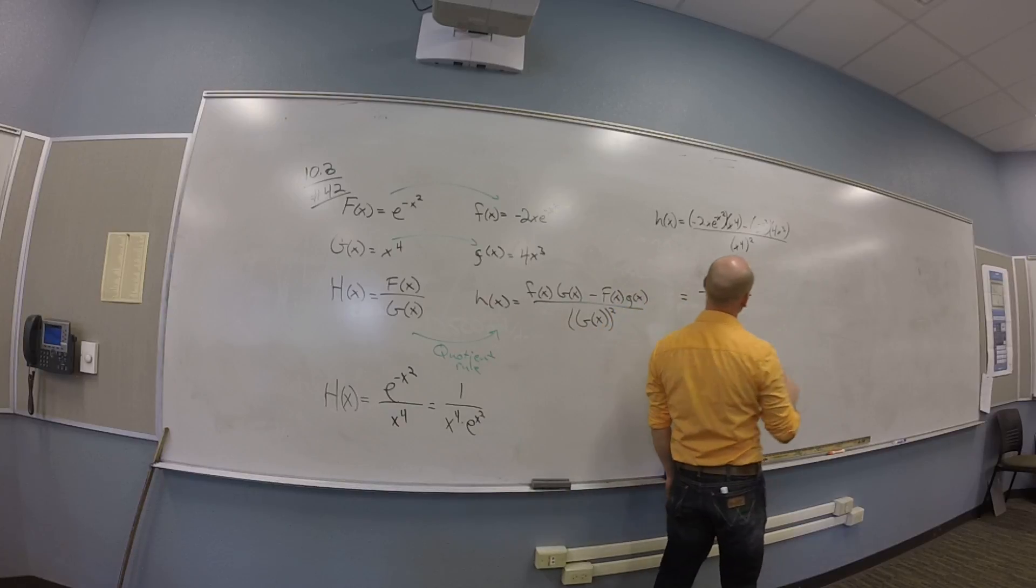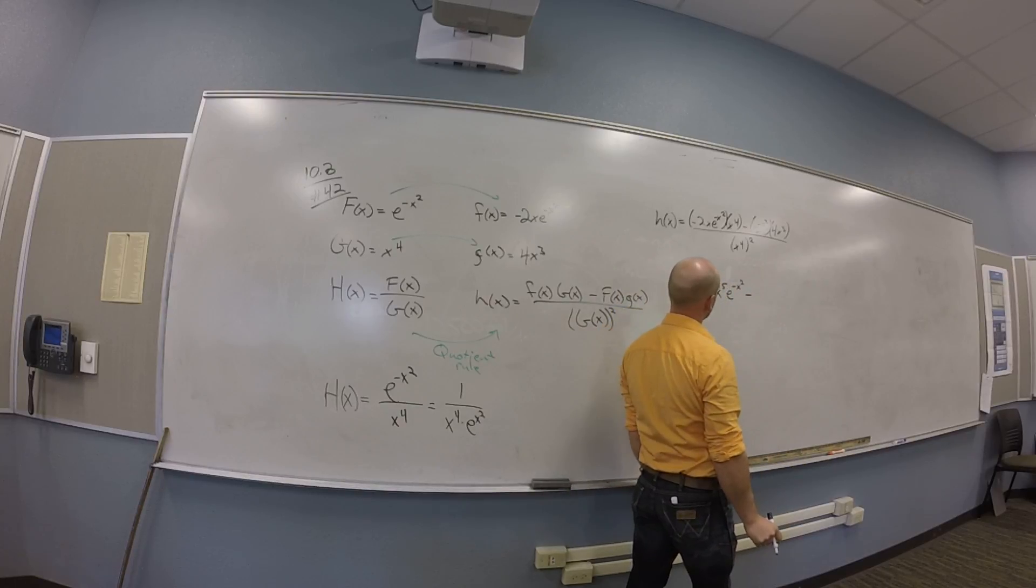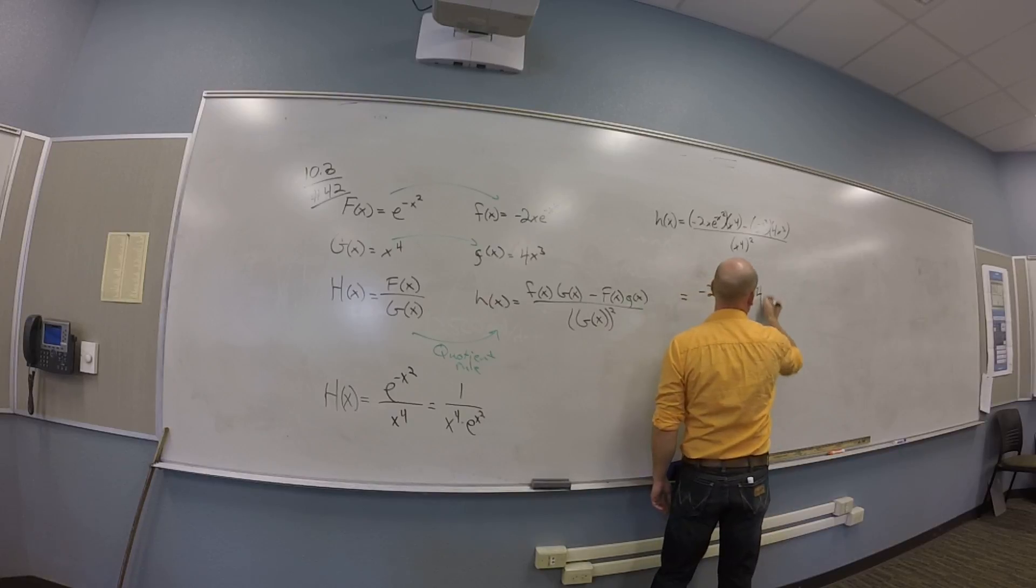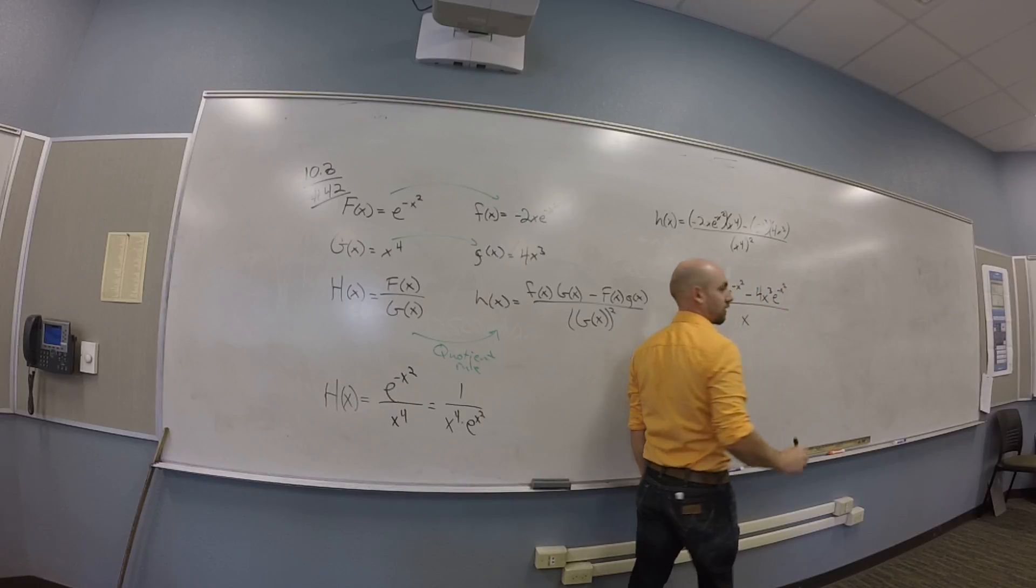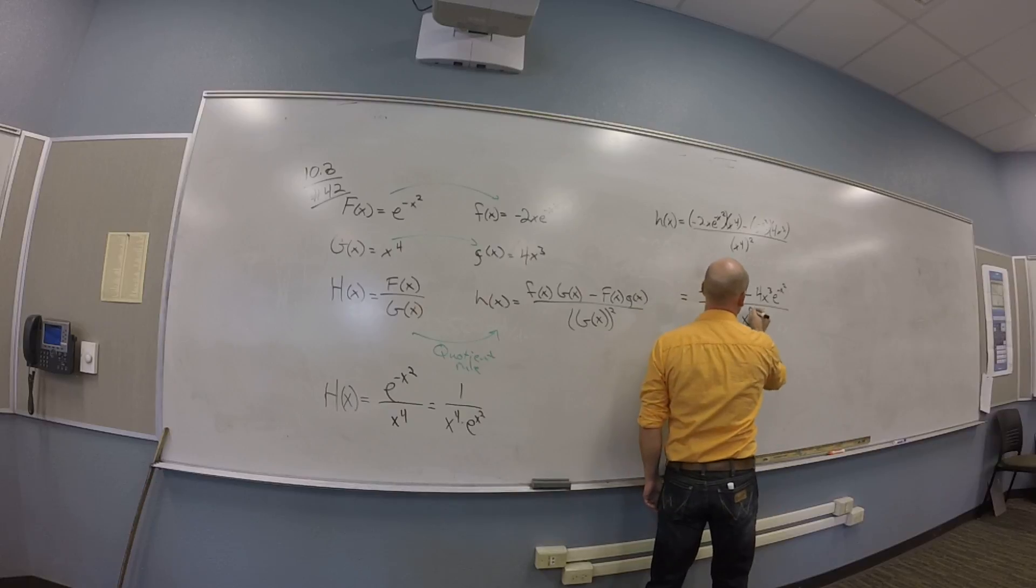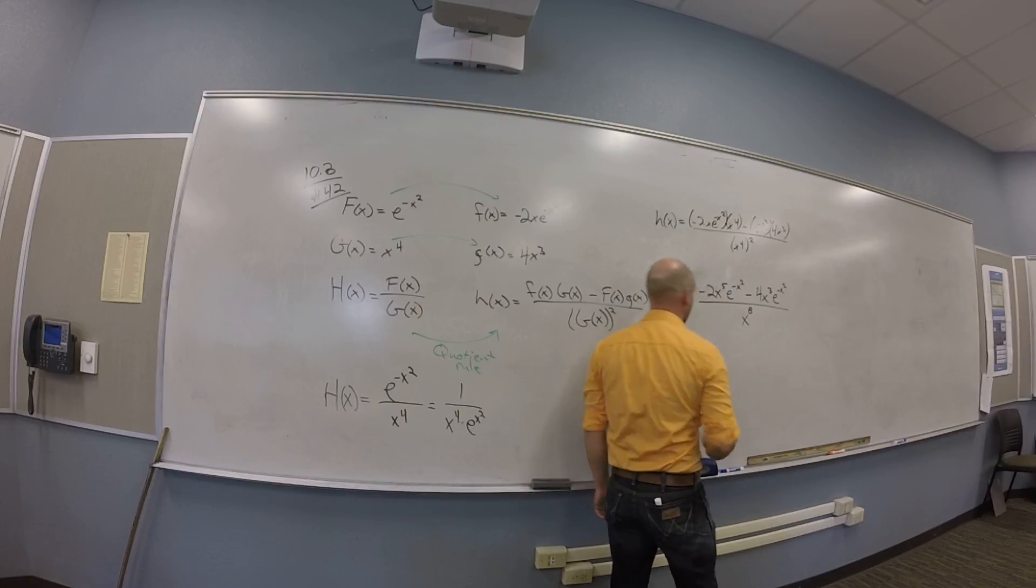So what's your total power of x there? Perfect. So you've got negative 2x to the 5th e to the minus x squared. You guys put that? Yeah. Then we also have minus 4x to the 3rd e to the minus x squared. And then this is all over x to the 8th.